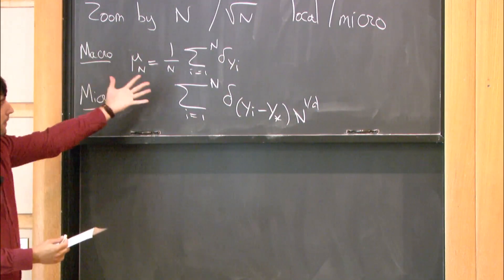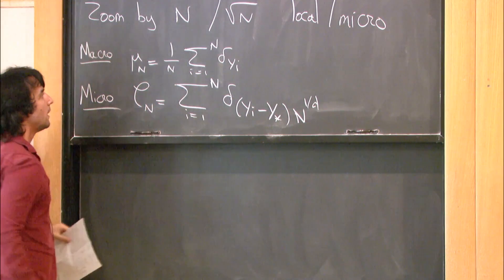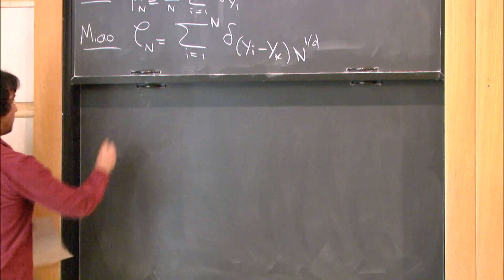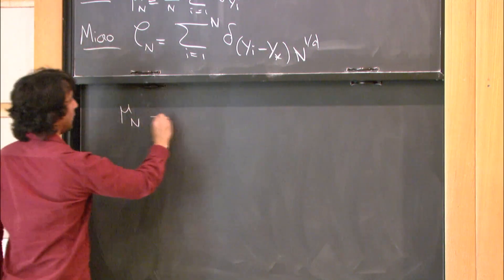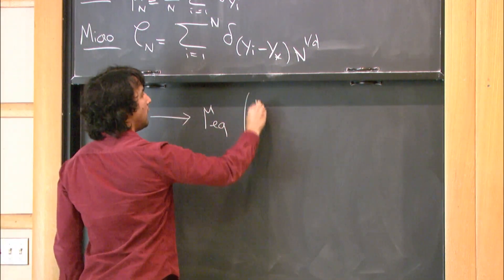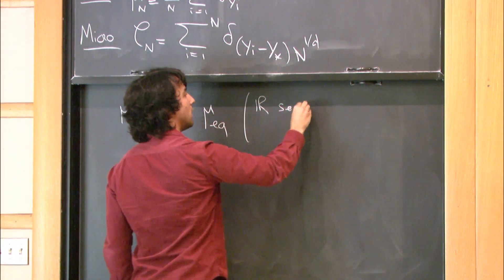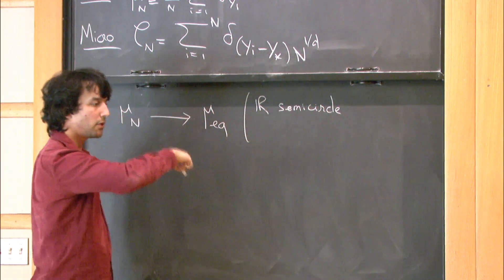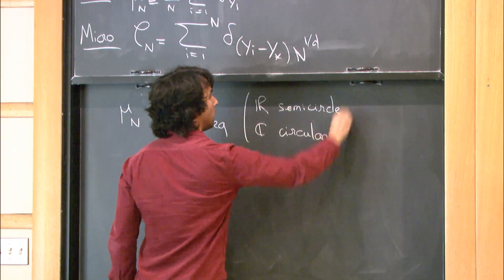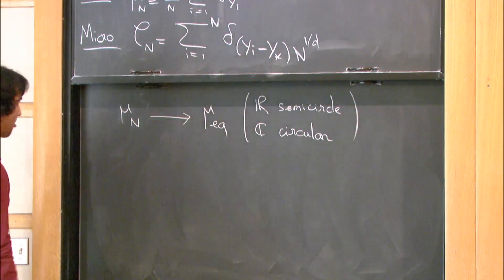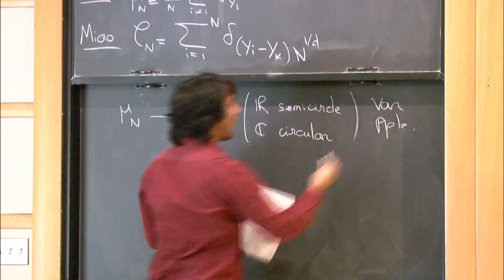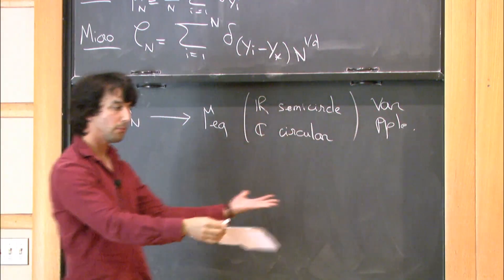So you could ask, is there a typical behavior? Maybe I can call that c_n. Is there a typical behavior for those quantities? It is known for the macroscopic theory. It was known for a long time. There is a limiting object. In R, it's the semicircle law, the semicircle distribution. So that's a density which has the shape of a semicircle. And in C, it would be the circular law. So that's just the uniform measure on the unit disc. And there is a variational principle attached to it that describes this object as the unique minimizer of a reasonable function.